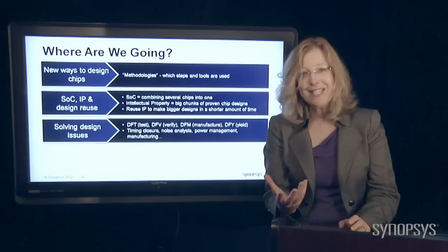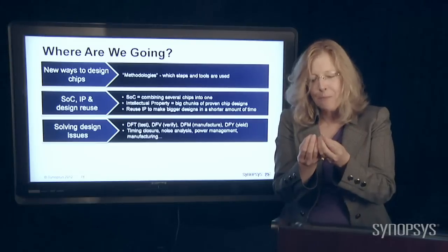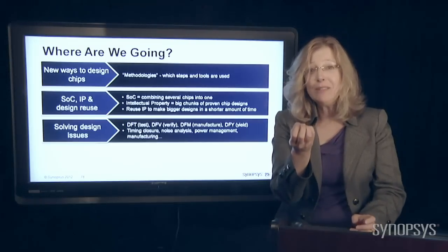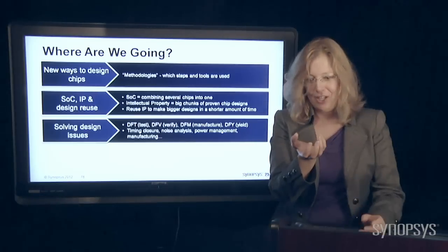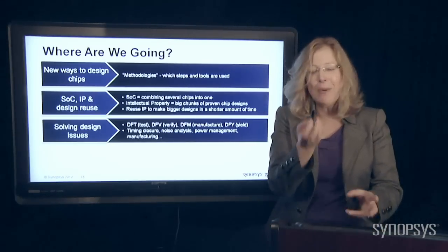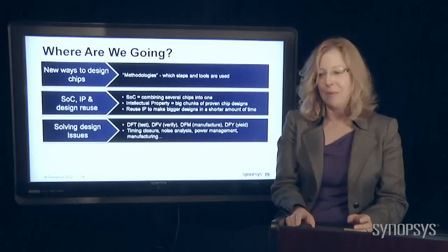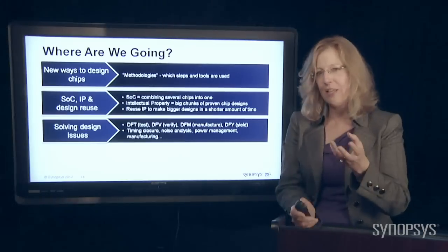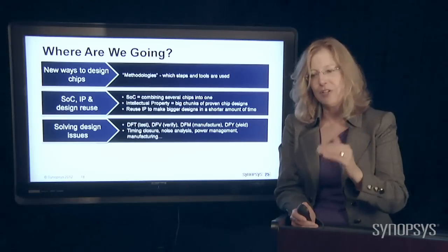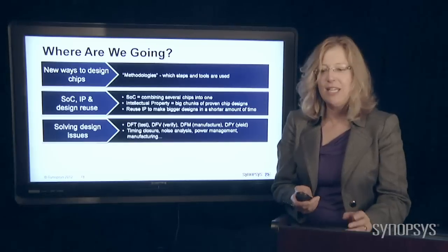We need to solve problems like by accident, when things got so small, little antennas were being built that people didn't realize, and they were pulling radio signals out of the air. And the chip is totally messed up. How do we prevent that type of phenomenon from happening? All these challenging design issues that happen as we get smaller and smaller, EDA is continuing to solve.